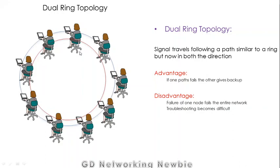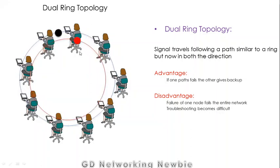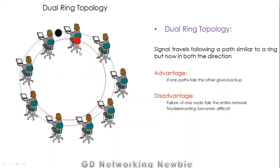In dual ring topology, signals travel in the shape of a ring but now travel in both directions. If one ring fails, the other ring takes over, providing a redundant network. This redundancy is the key advantage of dual ring topology.